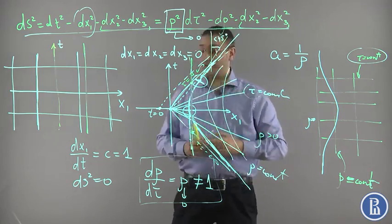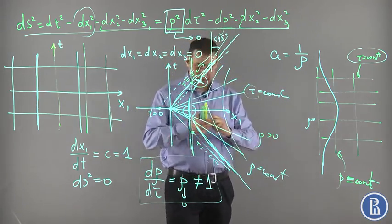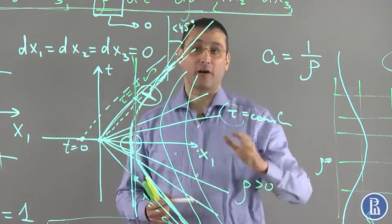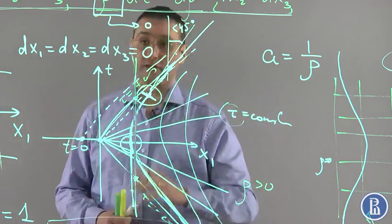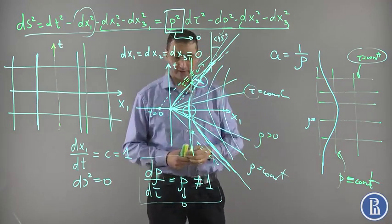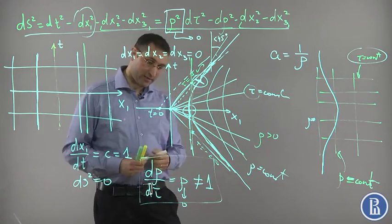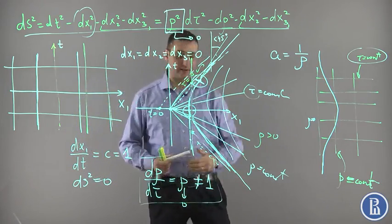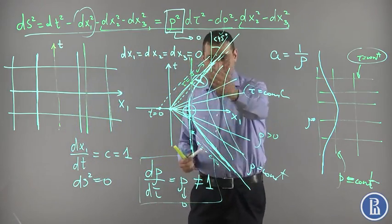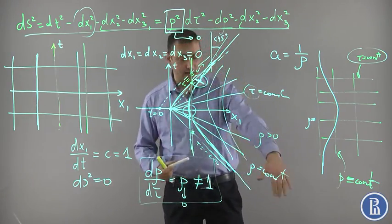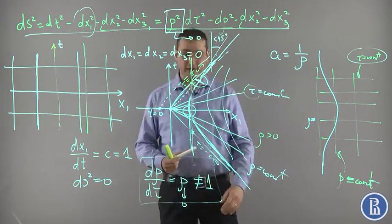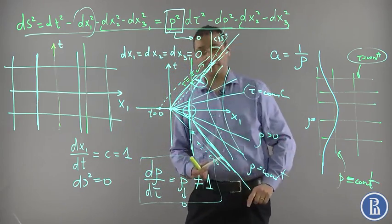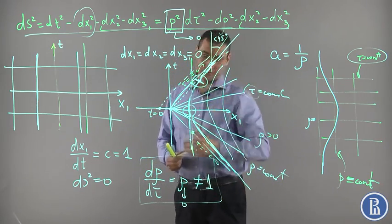These are all peculiarities of the Rindler metric which will be necessary for our further discussion in upcoming lectures. It is important to stress that this line is called the past event horizon of the Rindler observers — those observers which are at constant eternal acceleration — and this line is referred to as the future event horizon of Rindler observers.